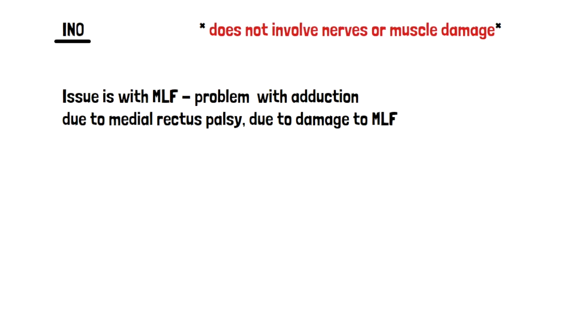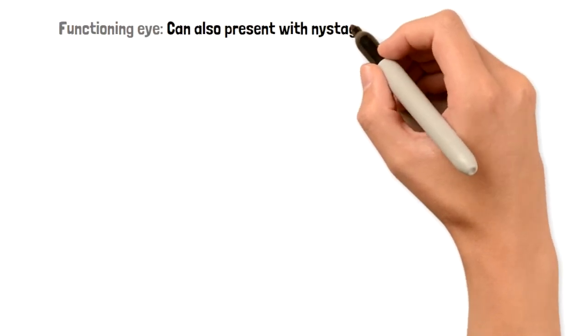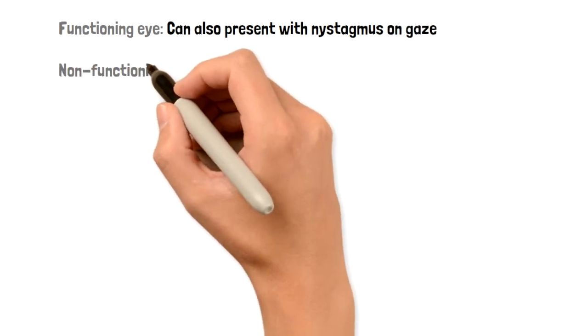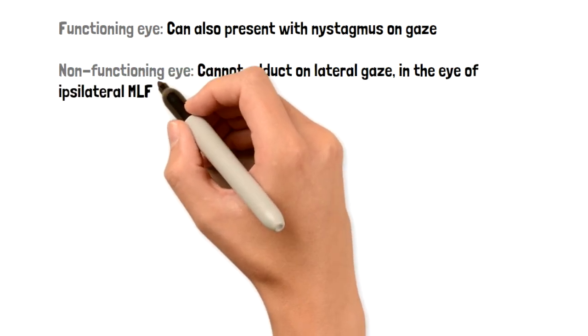Therefore, in INO we have a functioning eye and a non-functioning eye. And the non-functioning eye is obviously the eye that cannot adduct. So the functioning eye, which in our example is the left eye looking to the left, works. However, it can present with a nystagmus.